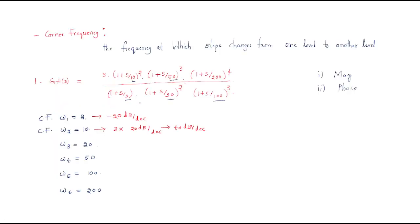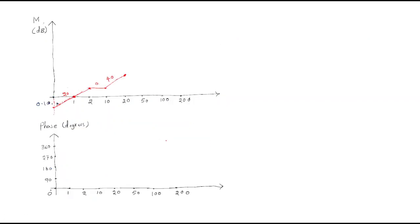At corner frequency 20, we have two poles, so minus 40 dB per decade is added. The plus 40 dB and minus 40 dB become neutral — they cancel — so up to corner frequency 50 the slope returns to 0 dB per decade.